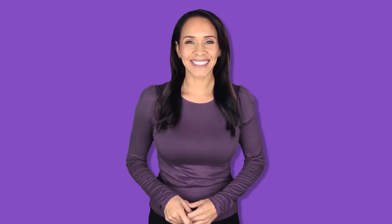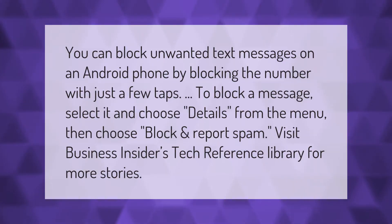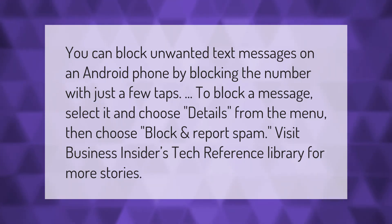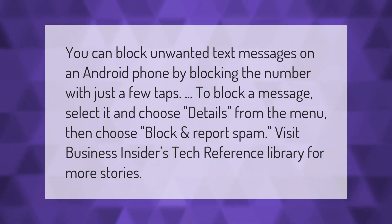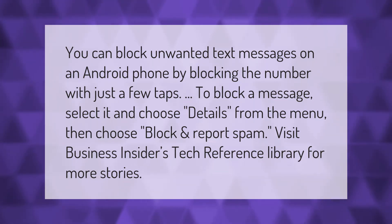You can block unwanted text messages on an Android phone by blocking the number with just a few taps. To block a message, select it and choose Details from the menu, then choose Block and Report Spam. Visit Business Insider's tech reference library for more stories.